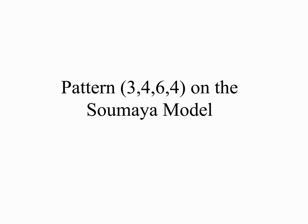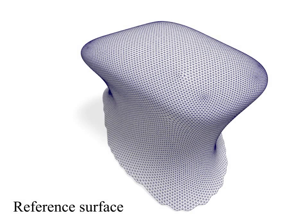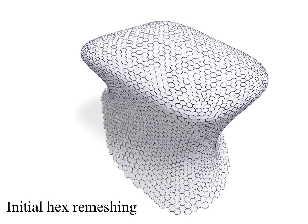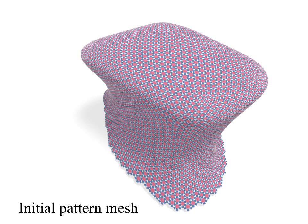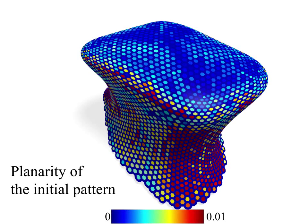We illustrate the complete pipeline using the Somaya model. As input, we consider a triangular reference surface mesh and a coarse remeshing, often with hexes. Then we generate an initial pattern mesh using simple geometric rules. Note that the initial mesh is not planar.